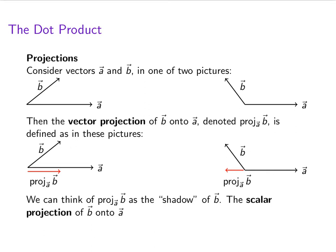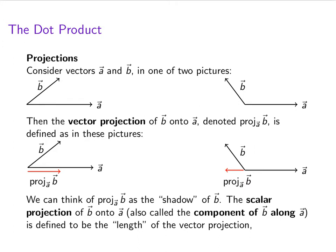We're also going to want to talk about the scalar projection of B onto A. And this is also called the component of B along A. It's defined to be the length of this vector projection.